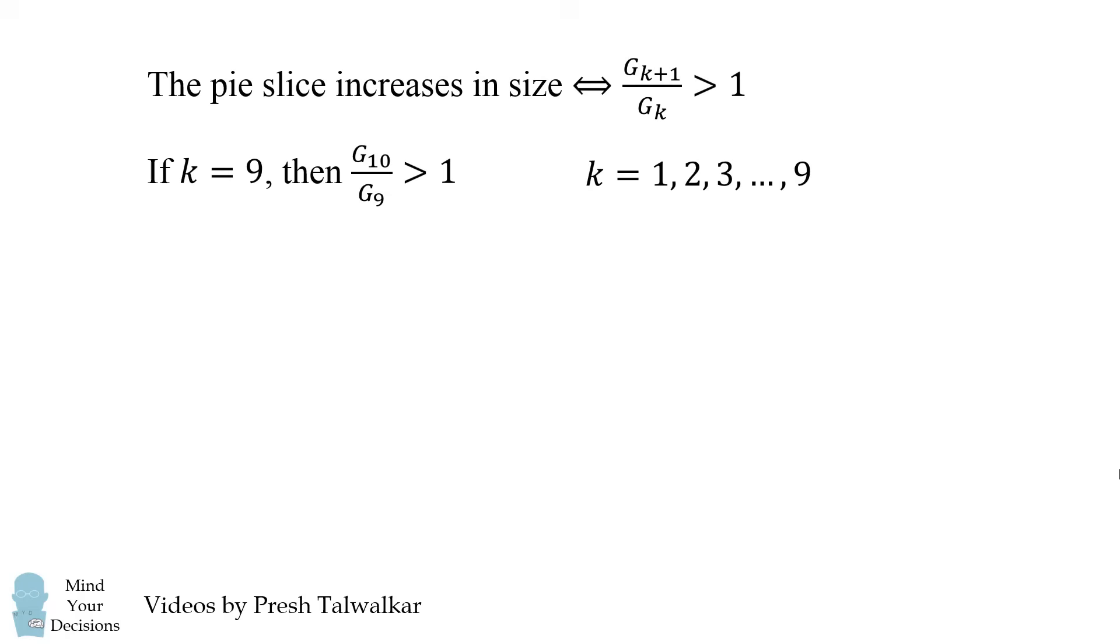So at k is equal to 9, we have the fraction g10 over g9 is greater than 1. That means the size of the slice is increasing all the way to guest 10, but then it decreases.